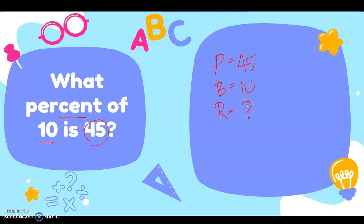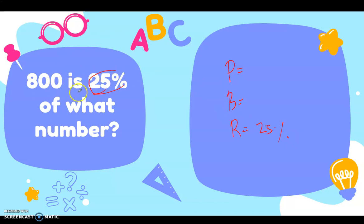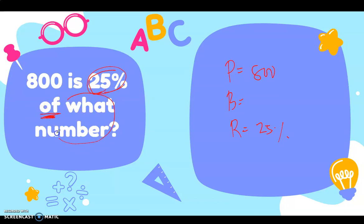Next: 800 is 25 percent of what number? The rate has a percent symbol, so the rate is 25 percent. Now 800 — the problem says '800 is 25 percent of what number.' Before the word 'of,' we don't know the number yet, so the base is our missing value. The percentage is 800, because the word 'is' comes after the number.